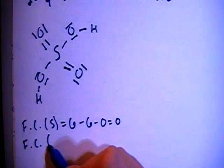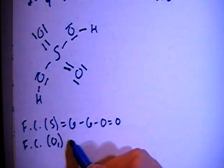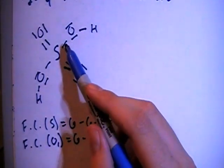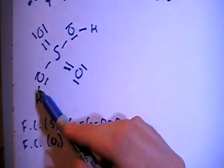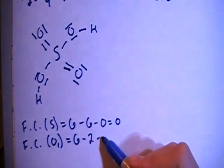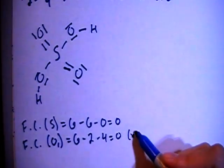Now we can do the formal charge of the oxygens with a single bond to sulfur. So O sub one, there's six valence brought in, minus one bond there, one bond there on both, so minus two bonds, minus one, two, three, four non-bonding, for a formal charge of zero. And remember there's two of those, so we'll multiply that times two.